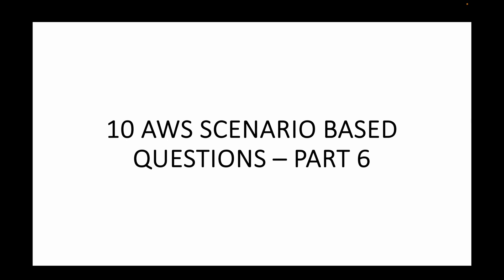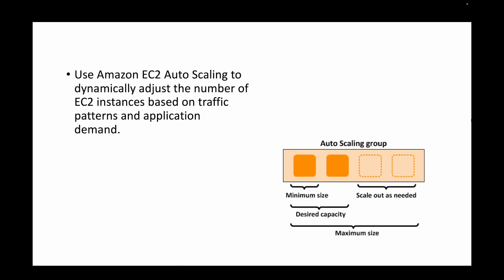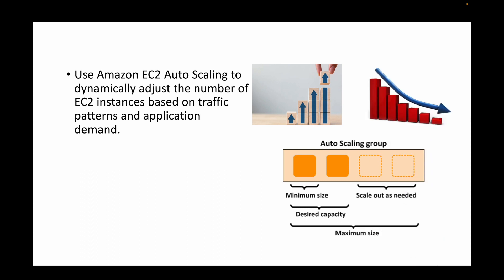The first question in Part 6 is: your application experiences unpredictable traffic patterns — how can you automatically adjust your EC2 instances' capacity to meet this demand? For this, we are going to utilize Auto Scaling Groups. Auto Scaling Groups help automate the scaling up and scaling down of your EC2 instances, dynamically adjusting the number of instances. We can define the conditions for when to scale up or scale down, which helps handle traffic and improve the performance of your applications.